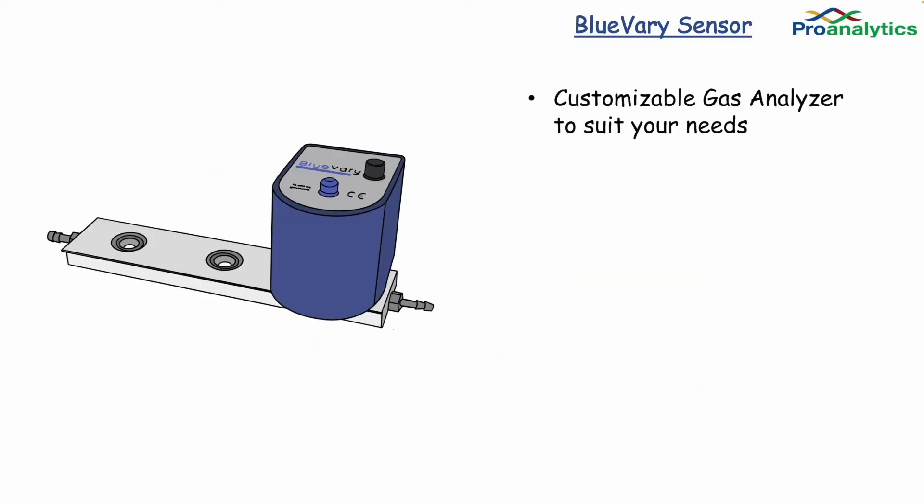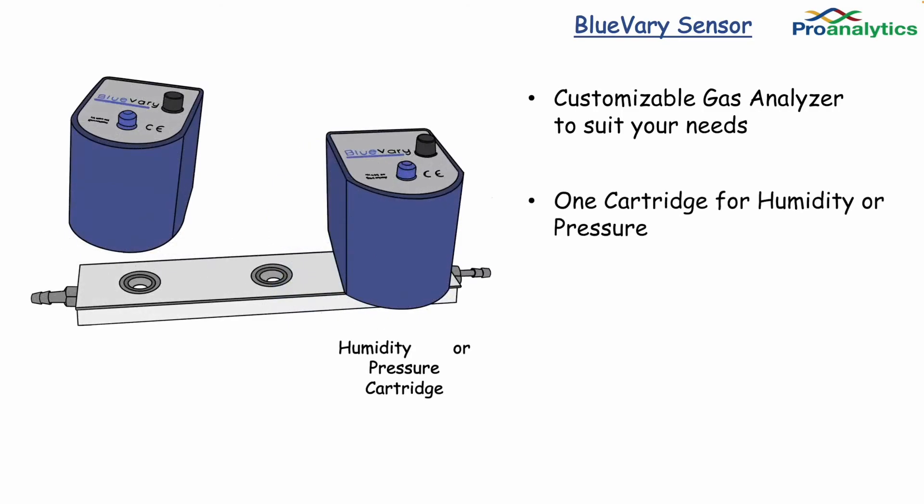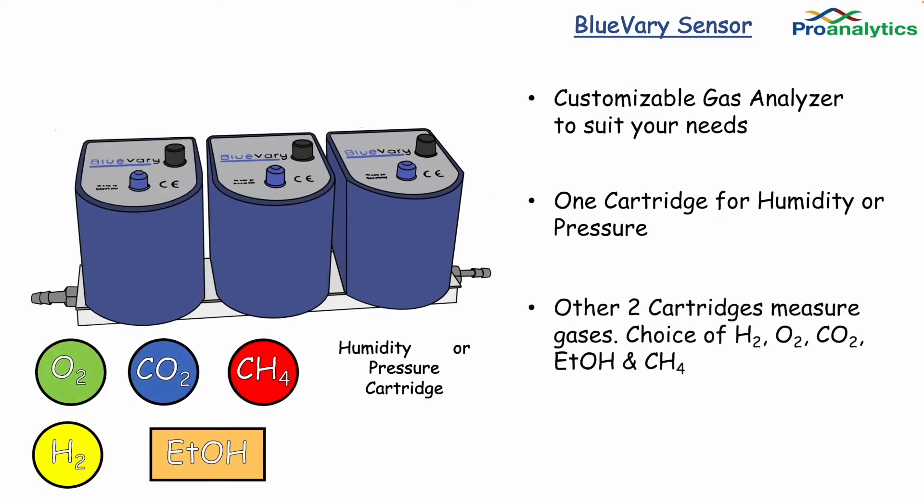BlueSense also makes the BlueVary sensor, which is tailored to meet your off-gas needs. The BlueVary has three plug-in positions for sensor cartridges. One cartridge is dedicated for pressure or humidity, while the other two cartridges can be used for oxygen, carbon dioxide, methane, hydrogen, or ethanol.